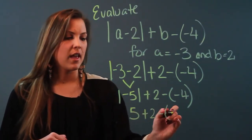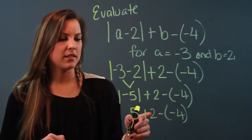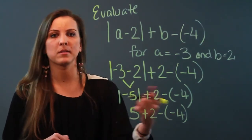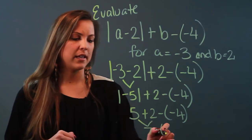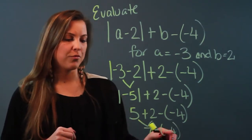I know I'm supposed to go left to right, so 5 + 2 is 7 minus -4. When you see a minus sign and another minus sign next to each other, you can connect them and make a plus sign.